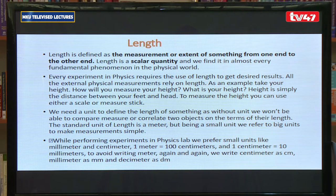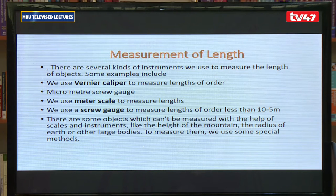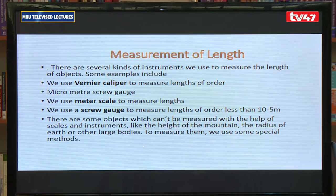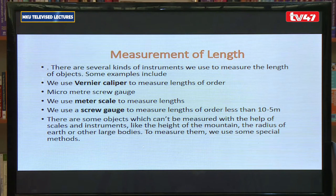The standard unit of length is the meter. There are several kinds of instruments used to measure the length of an object. These include: a vernier caliper, a micrometer screw gauge to measure the diameters of very small wires, a meter scale, and tape measures.